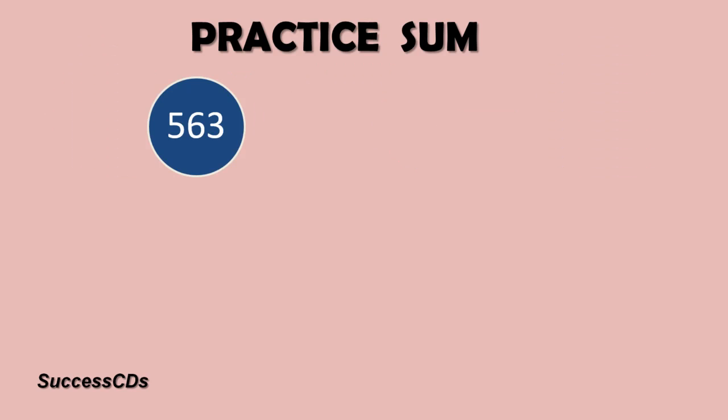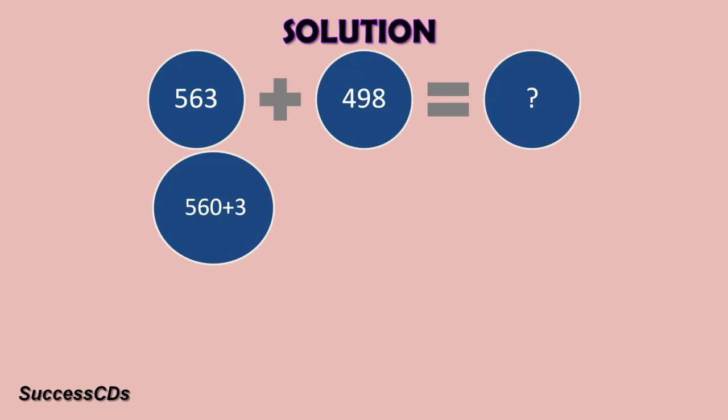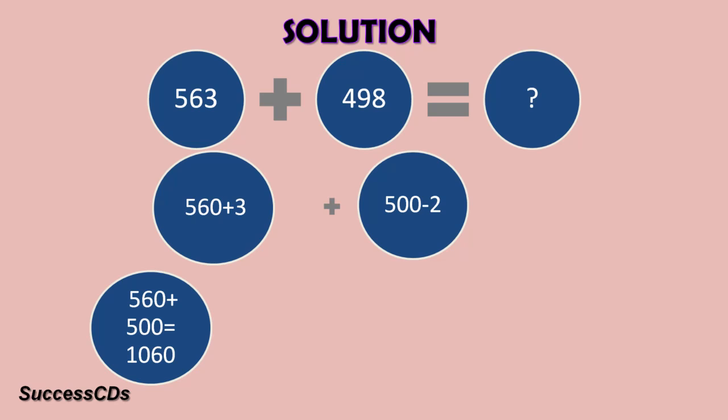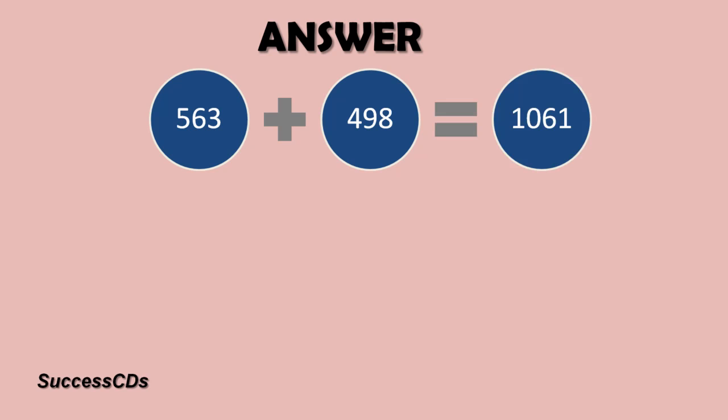Here is a sum for your practice: 563 plus 498. The solution: 563 can be written as 560 plus 3, and 498 can be written as 500 minus 2 — since the ones digit 8 is greater than 5, we round up to the next 0, which is 500. Now we add up 560 plus 500 to get 1060. We had added 3 and subtracted 2, so 3 minus 2 gives us 1. We add 1 to the sum and the answer is 1061.